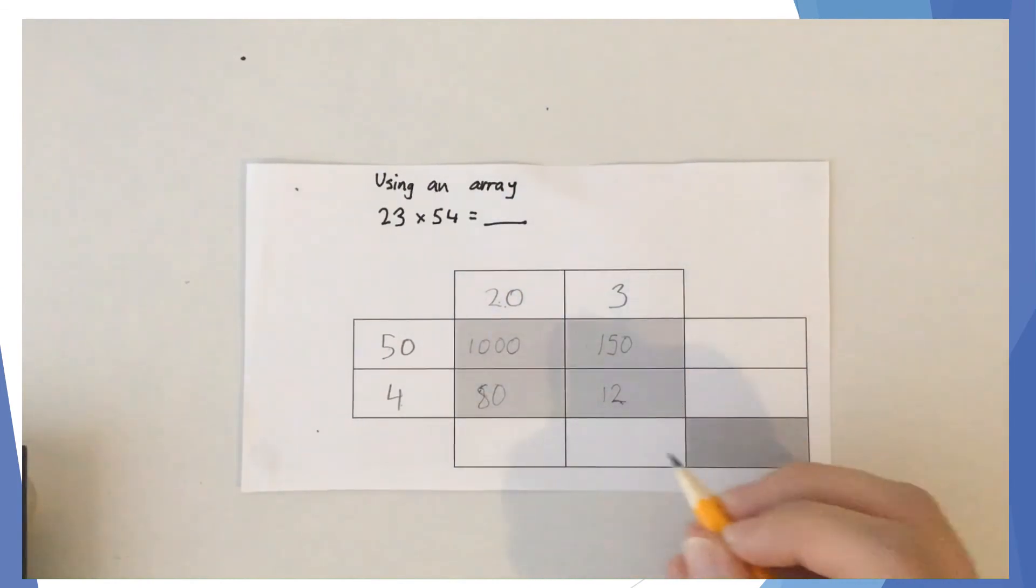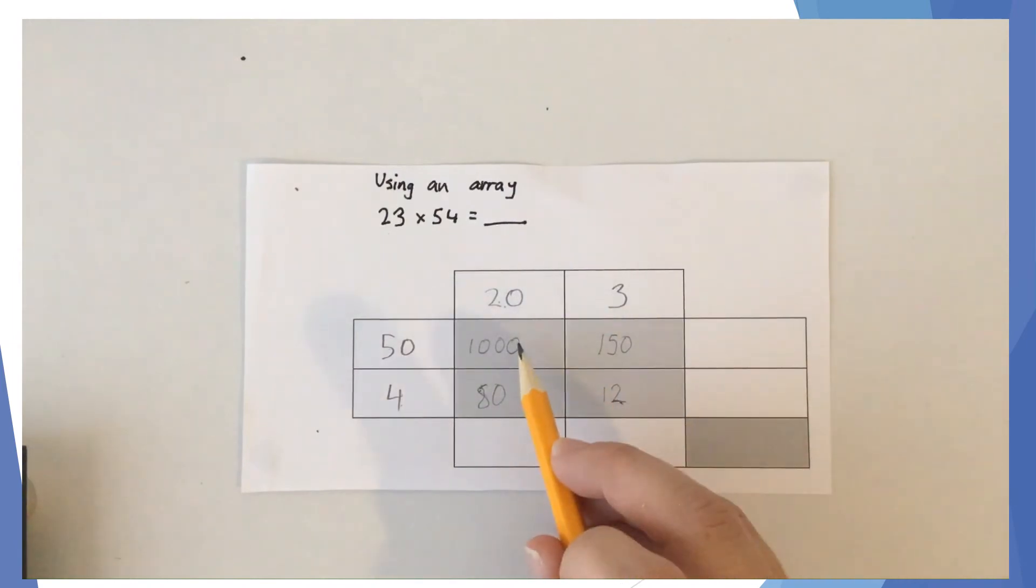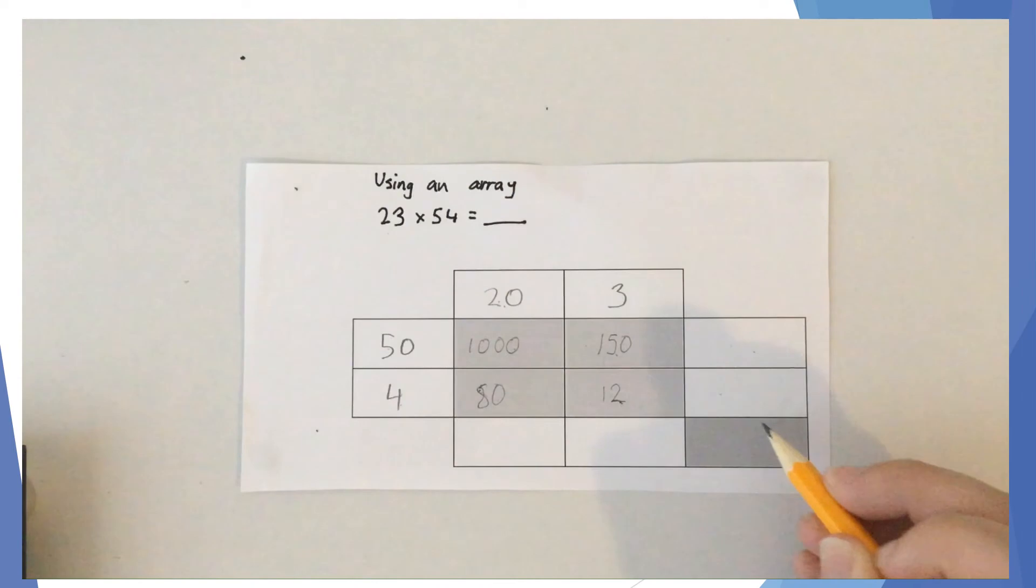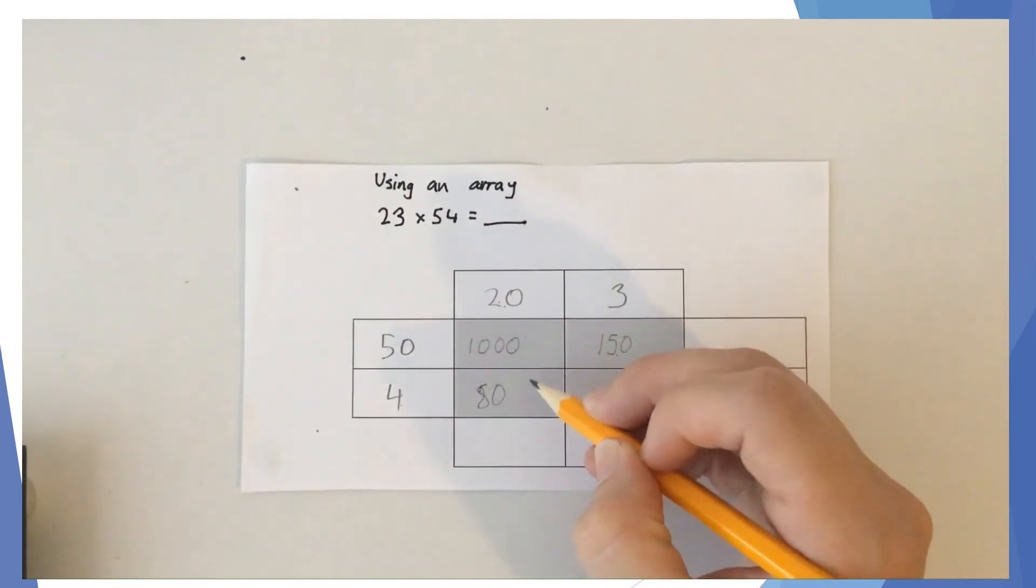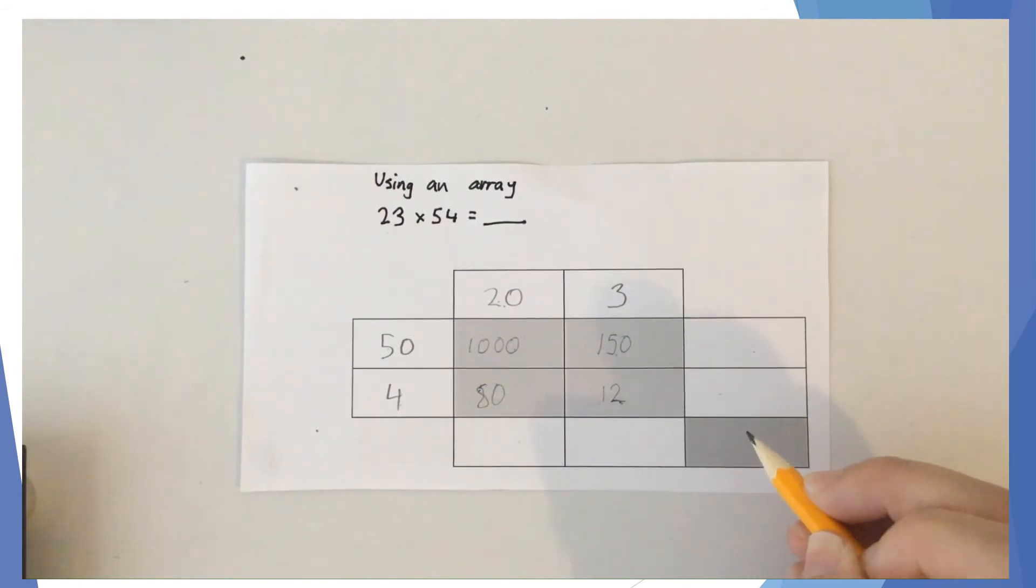Now this is where the array puts them back together again. We need to add up these two numbers and write the answer there. Add these two numbers and write the answer there. Then add those two numbers and write the total there, which is the overall answer. Or we can add those two numbers and write the answer there, and add those two numbers and write the answer there, then add those two and get the total answer there.